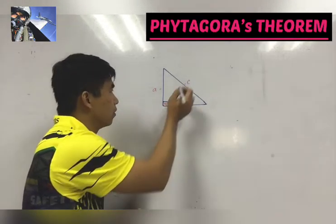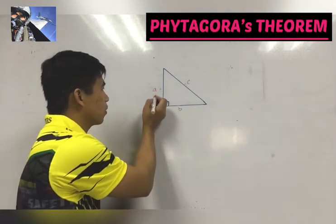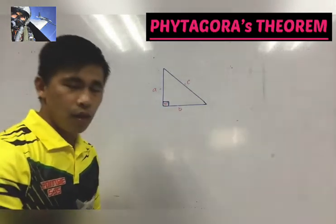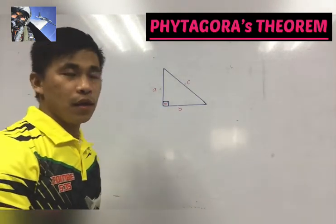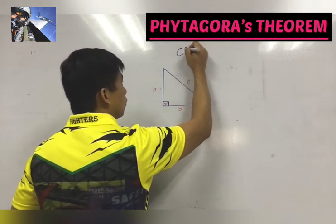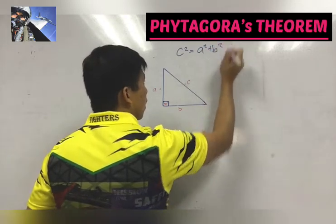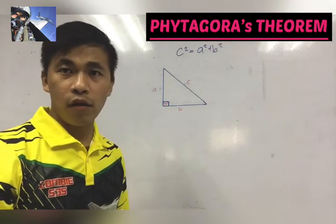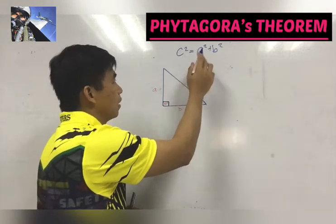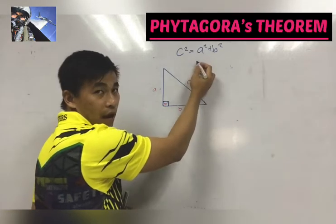So generally, Pythagoras theorem is represented in this equation. As what I have said, the square of the hypotenuse or C is always equal to the sum of the square of the other two sides which are A and B.